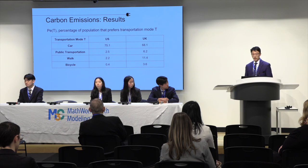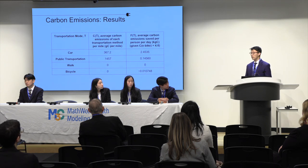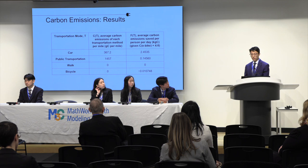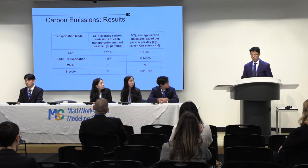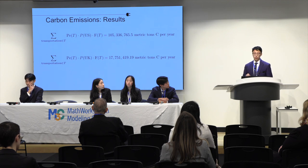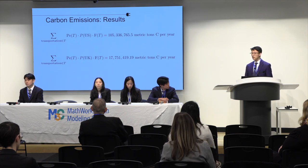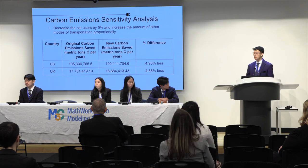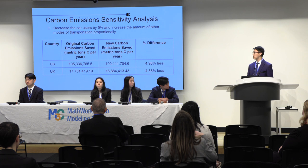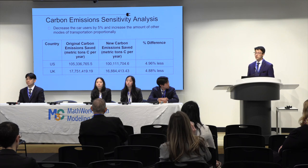Here are the constants used, including average mileage for each transportation mode, and P of T, which is the percentage of population that prefers transportation mode T. After plugging in all constants, F of T — the average carbon emissions saved per person per day in kilograms of carbon — is approximately 2.5 kg for a car, 1.15 kg for public transportation, 0 for walking, and negative 0.01 for biking. When calculated for the total population of the US and UK, we can save up to 105 million metric tons of carbon per year in the US and 18 million metric tons per year in the UK. Sensitivity analysis was conducted by decreasing car users by 5% and increasing other modes proportionally, resulting in about 5% less savings — which is expected and shows our model is robust.